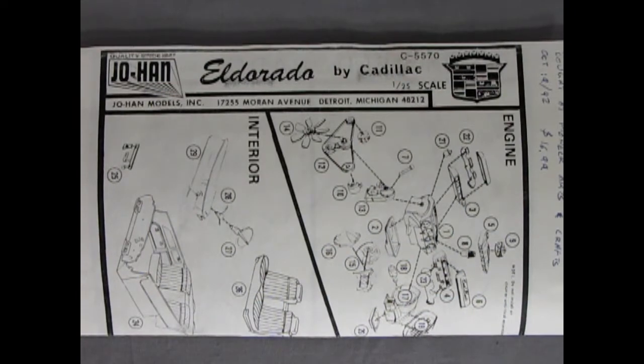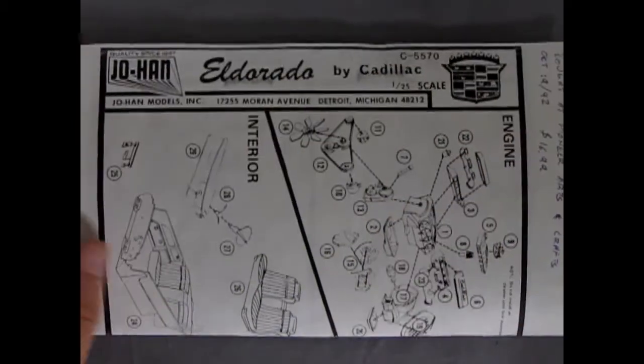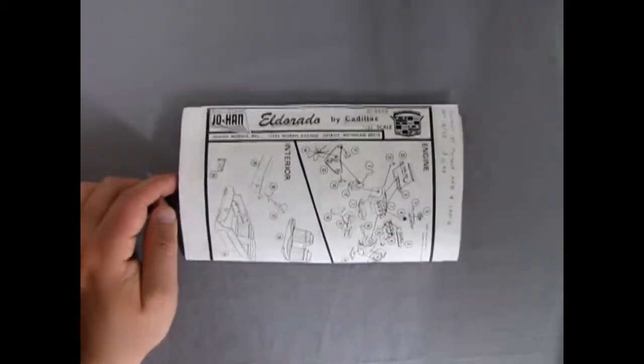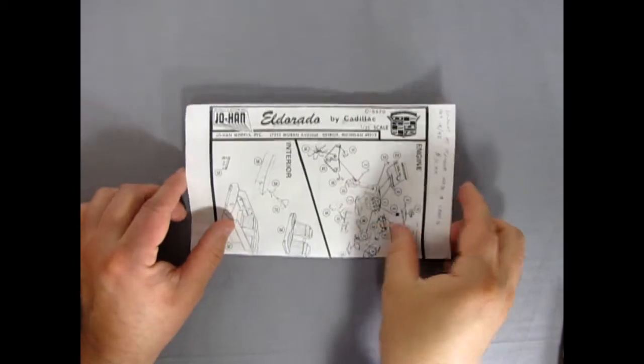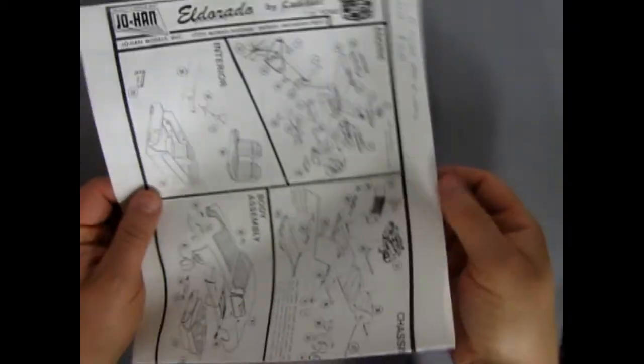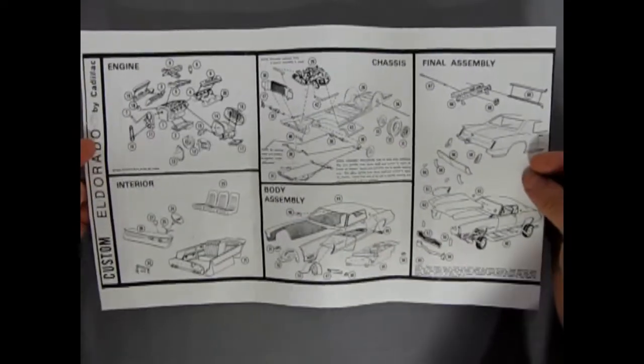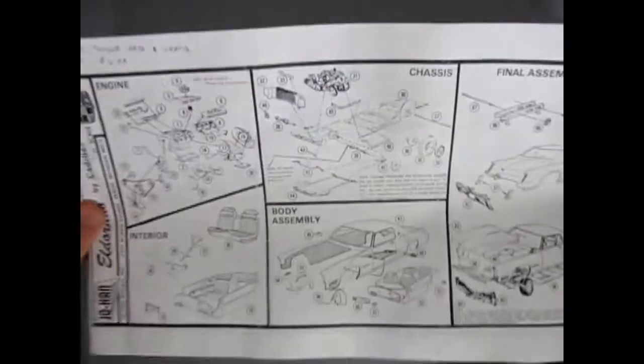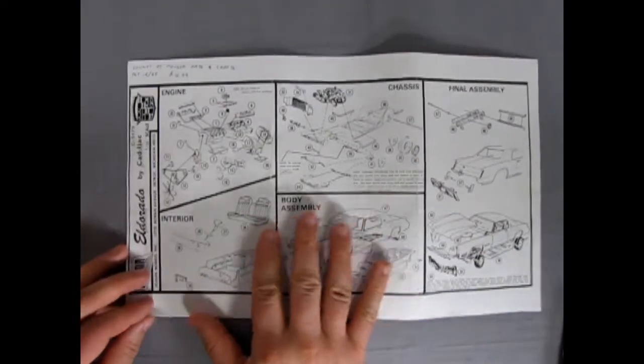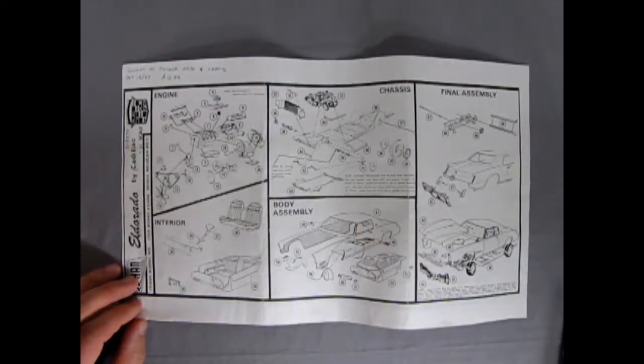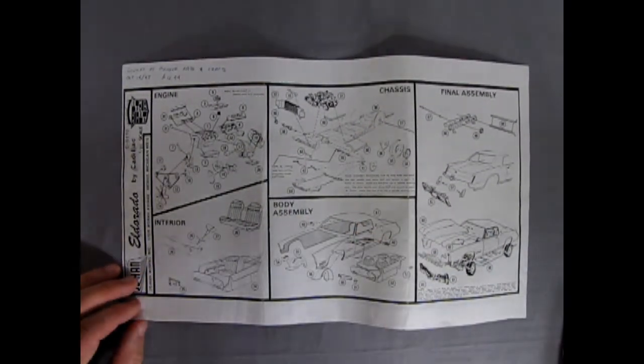And here we have our instruction sheet for our 1970 Cadillac Eldorado from Johan. I'll just zoom back a little bit. Johan usually had a one sheet instruction set but they would print it on both sides as we can see here. So what we'll do is we'll go through panel by panel and see what each of the little illustrations are.